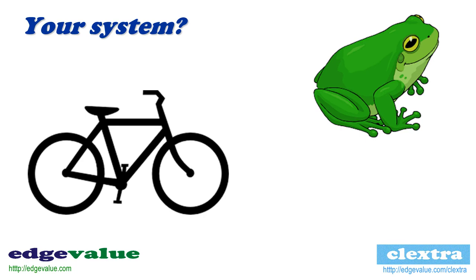The approach to a frog-like system is extremely different. It has to be holistic — it has to involve systems thinking, design thinking, gestalt principles, and a whole lot of other factors. Of course, you could bring some of those factors into a bicycle-like system too, but the key thing is to identify the type of system you're approaching before you start touching anything at all.